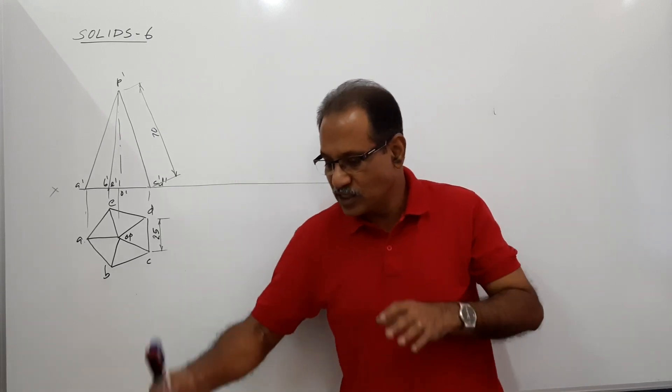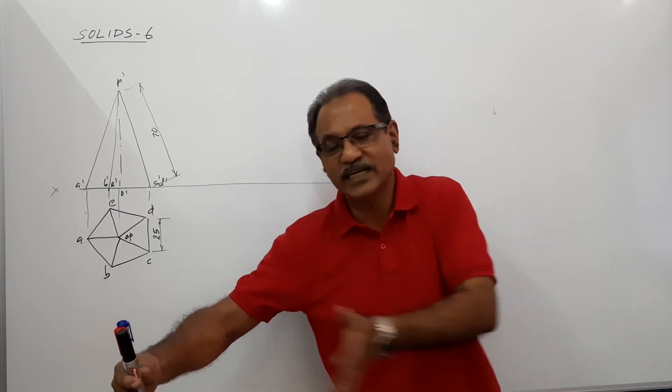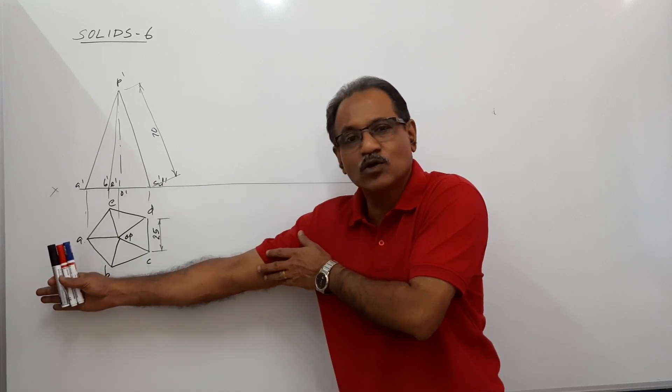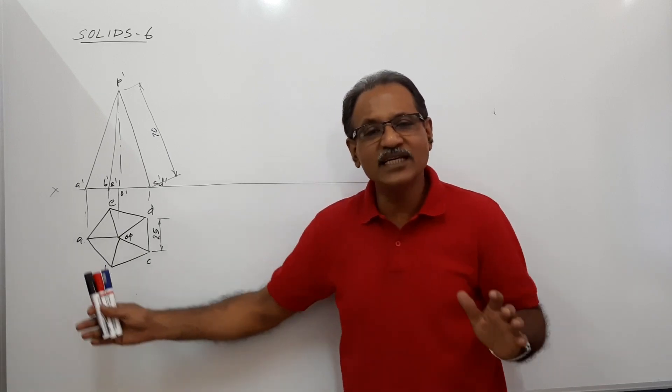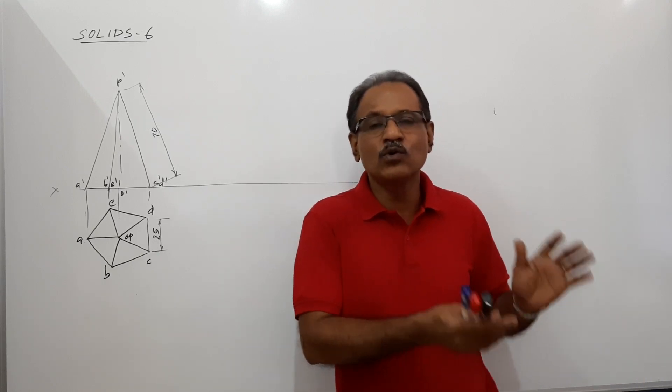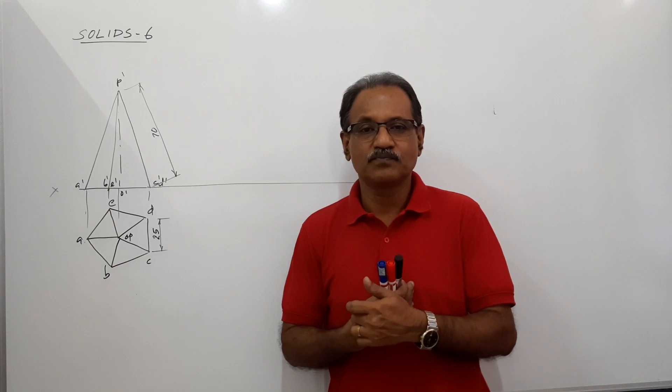If this is the object and this is the profile plane, you have to look from the right side to project the view onto this profile plane and rotate that profile plane and make it coinciding with the VP. That is called the right side view or the end view. It is drawn on the left side of the elevation.